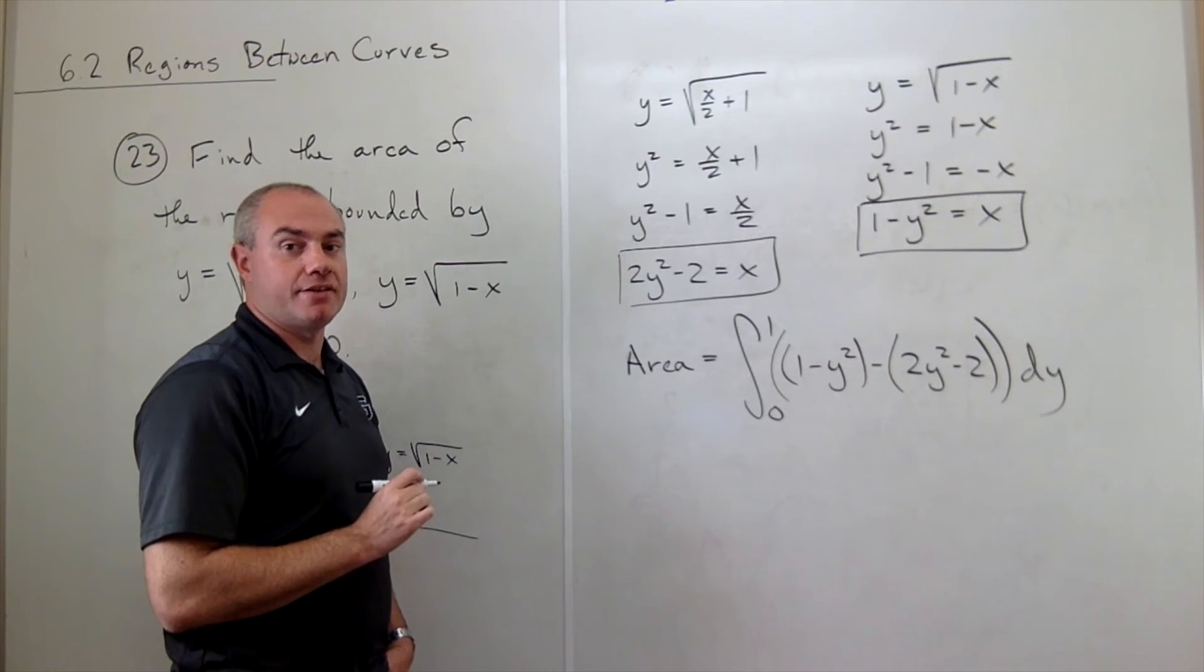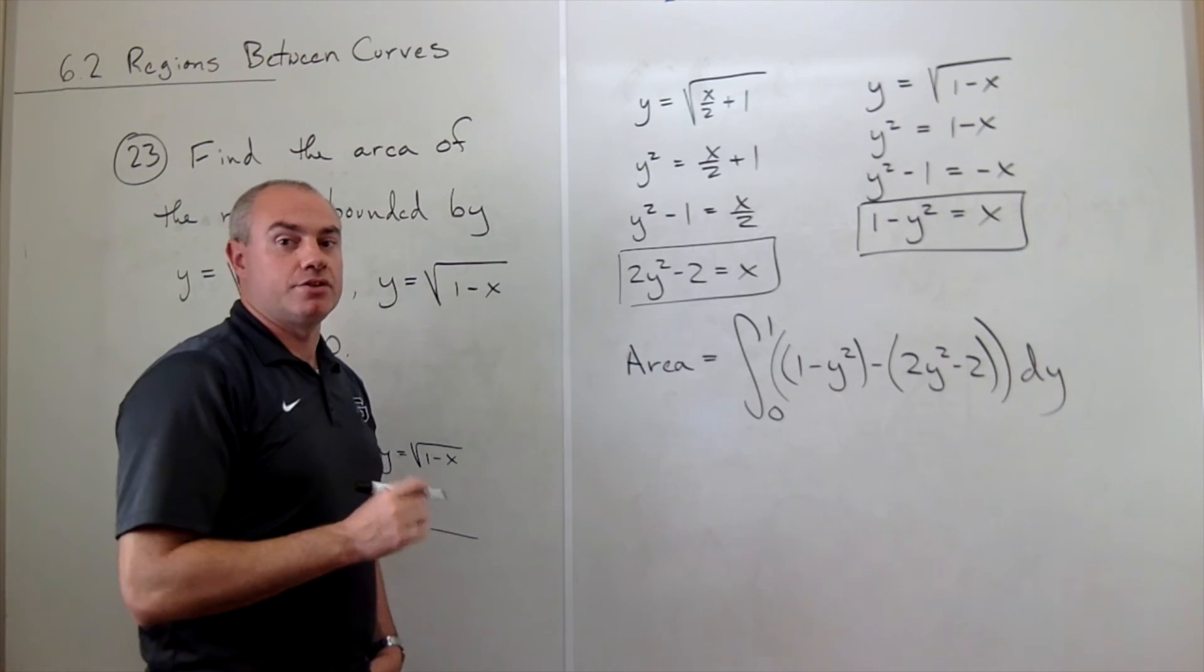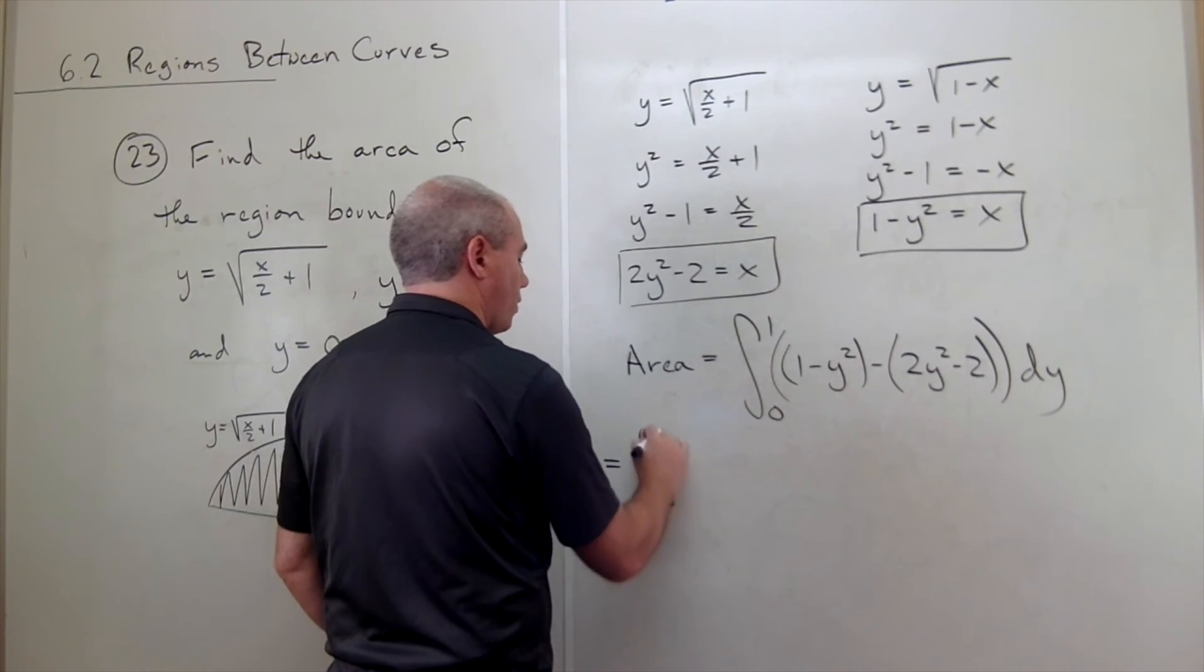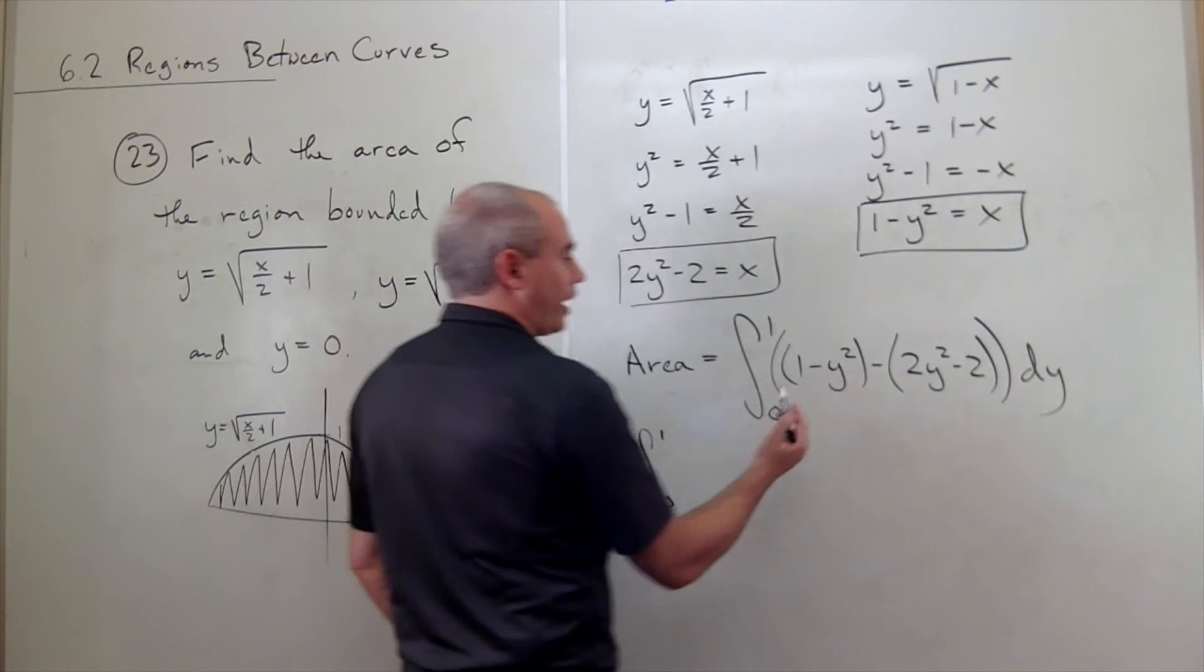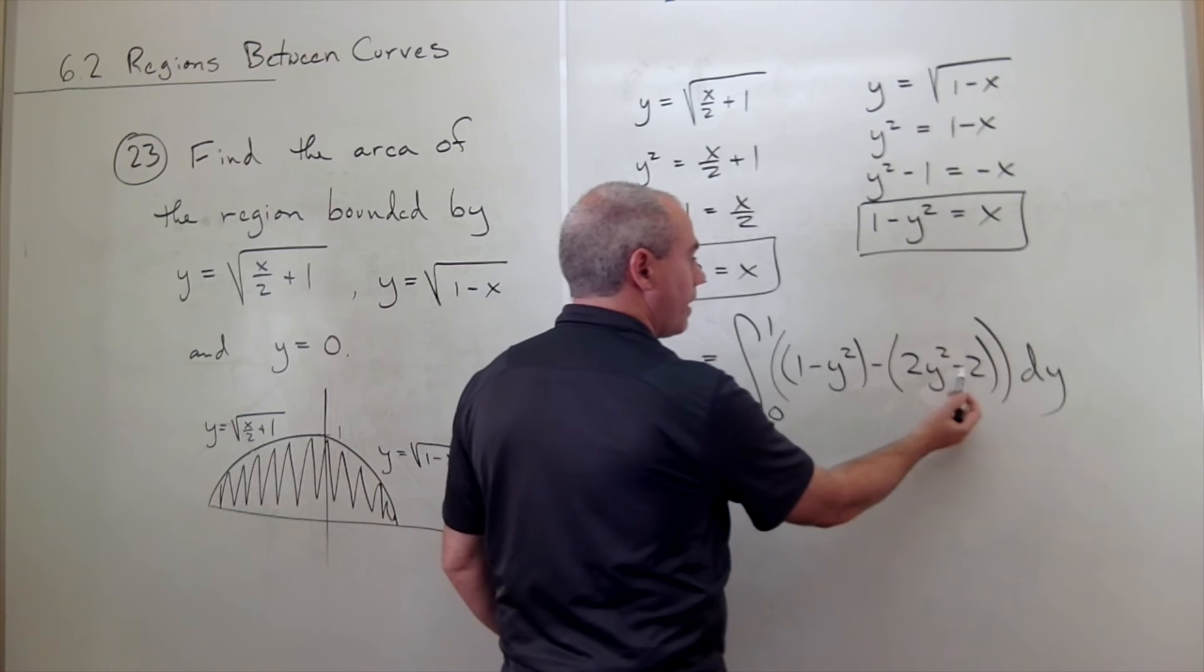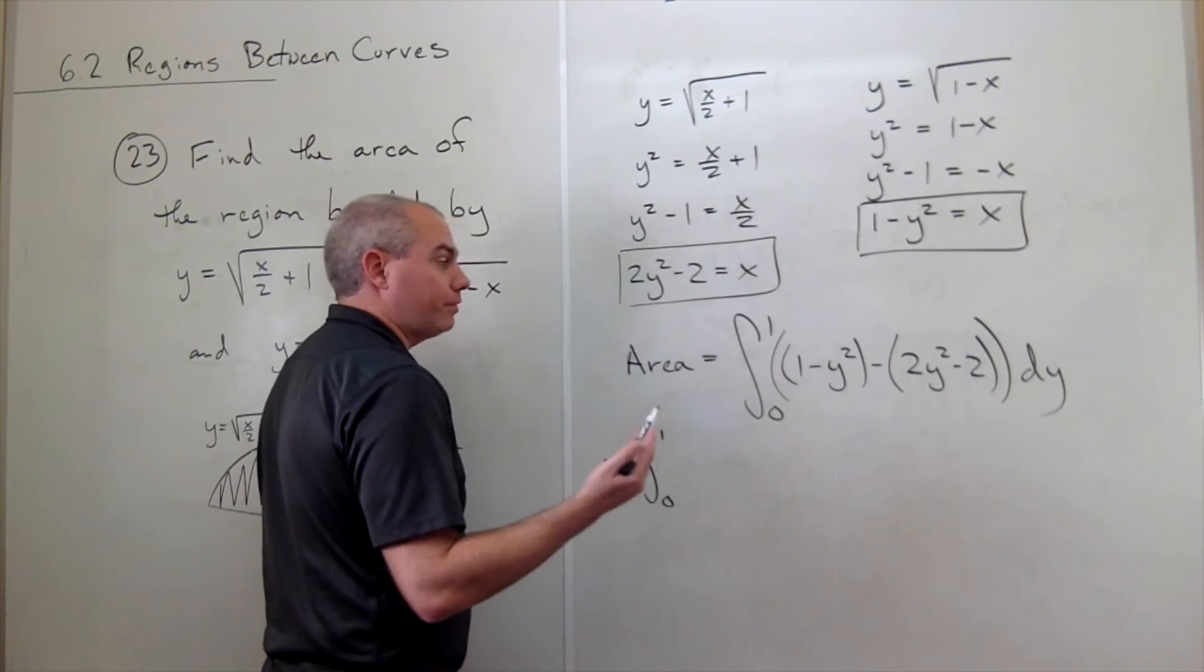Let's rewrite this guy, just clean it up a little bit before we integrate it. So this is 0 to 1 of, I've got a 1 minus a minus 2, so a 1 plus 2, that's 3,